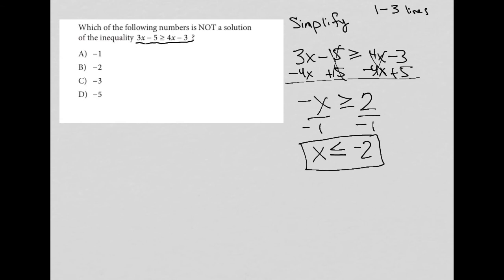So given what I just found through simplification, basically everything less than negative 2, so everything this way on the number line, negative 3, negative 4, so on and so forth, negative out to negative infinity, would be considered a solution.